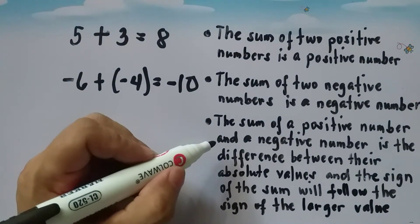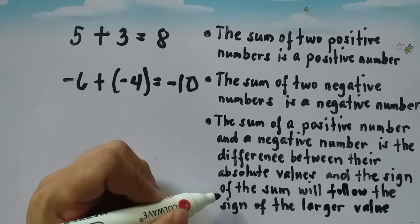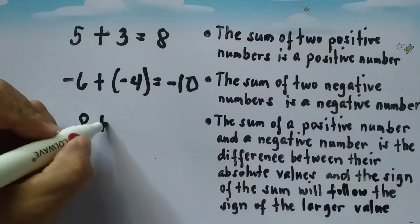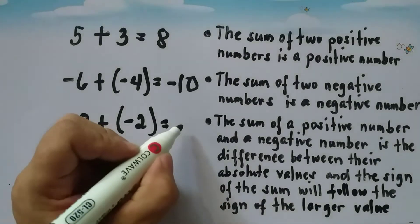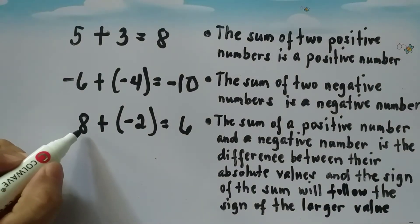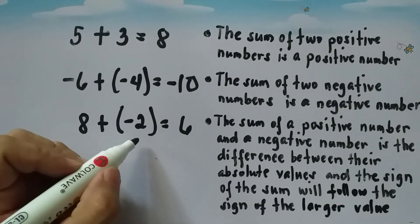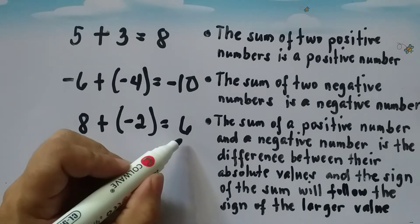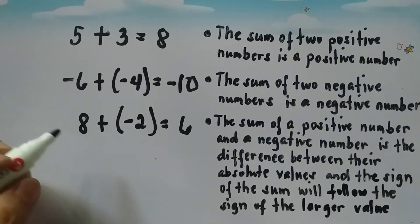The third rule: the sum of a positive number and a negative number is the difference between their absolute values, and the sign of the sum will follow the sign of the larger value. So if we have eight plus negative two, then we have a result of positive six. For example, if we have eight positive cases and from there two were confirmed negative, then we'll have six positive cases left.